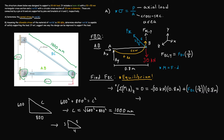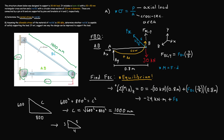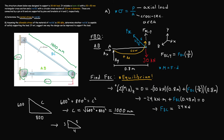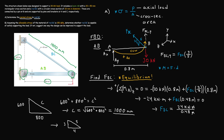Simplifying the moment balance equation: negative 24 kilonewton-meters plus FBC_y times three-fifths times 0.8 meters equals zero. Solving for FBC_y, we add 24 kilonewton-meters to the right side and divide by 0.48 meters. The meters cancel, leaving kilonewtons. From 24 divided by 0.48 we get FBC_y equal to 50 kilonewtons.